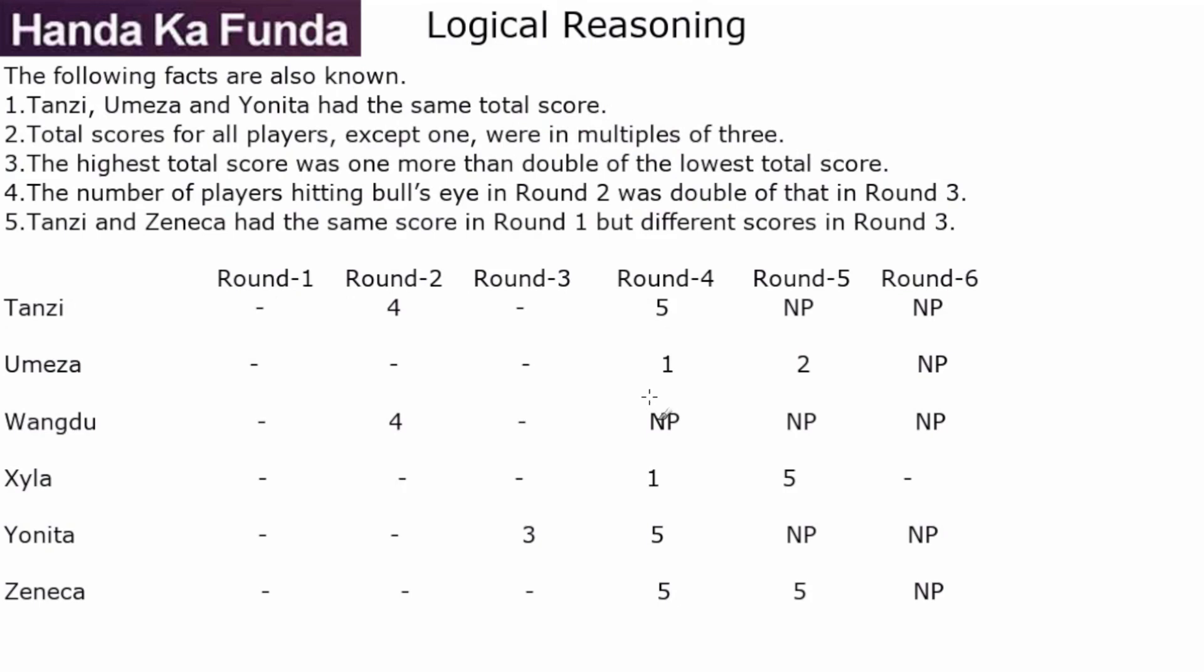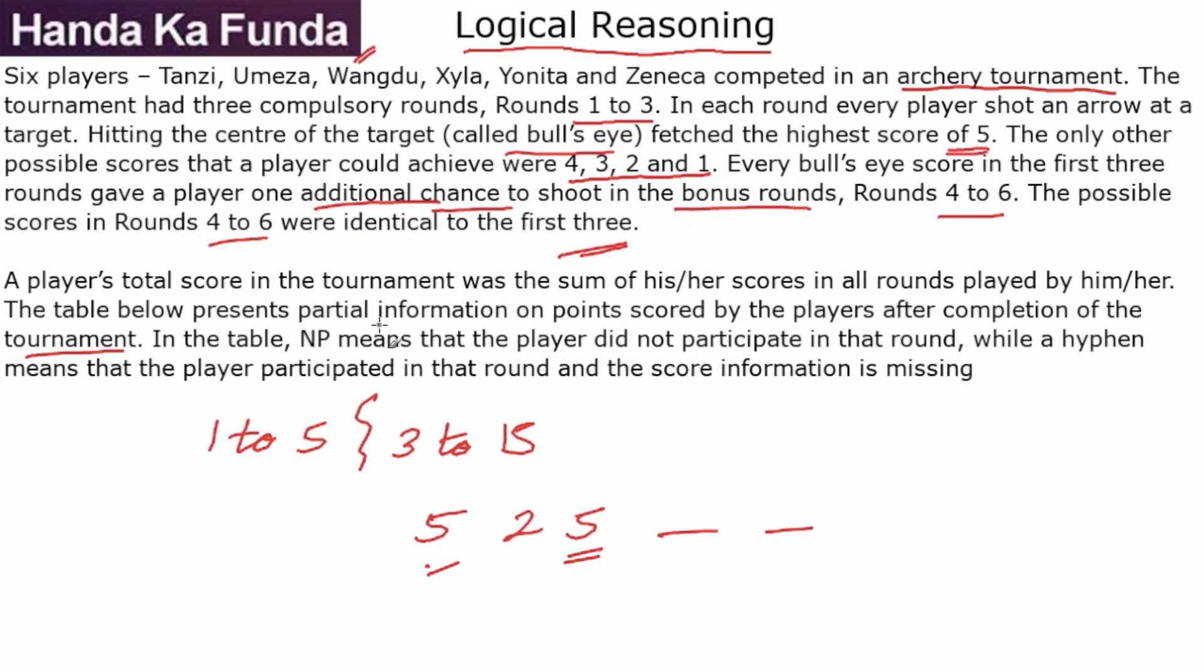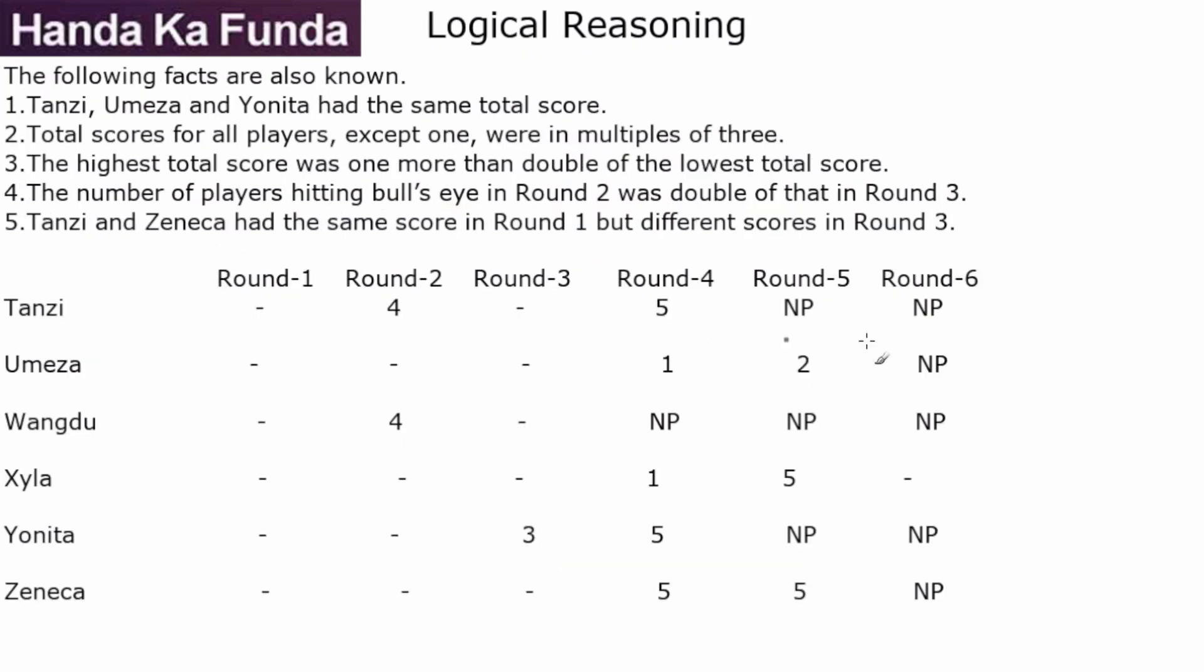The table below represents partial information on the points scored by the players after the completion of the tournament. So we will have a look at the table. This table has some information. Some of them are dashes, hyphens, and some of them are NP. What do they mean? NP means that the player did not participate in that particular round. While a hyphen means that the player participated but the score information is missing. So what can I figure out from that? NP, NP, and then there is a 5. That means Tanzi must have scored one bull's eye and exactly one bull's eye.